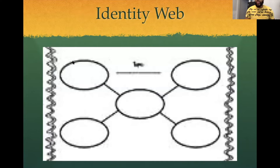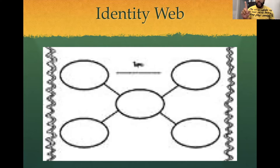Today we're going to be creating an identity web. In this identity web, you're going to be answering different questions: What are your likes? What are your hopes? And what are some things that you've accomplished that you think are important? This is something you'll be able to turn in at the end of class. When I talk about hopes, that means what do you hope you can do in the future?